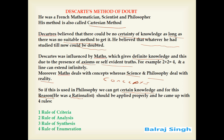For this reason, Descartes resorted to the use of reason, because he was a rationalist. Rationalists are those people who believe that only reason can be the source of ultimate knowledge. He came up with certain rules: the rule of criteria, the rule of analysis, the rule of synthesis, and the rule of enumeration.